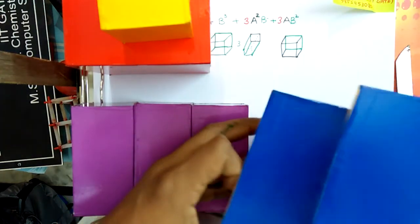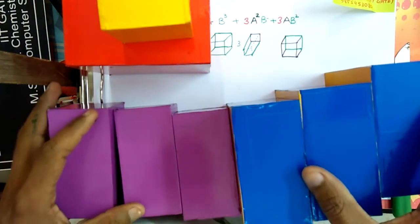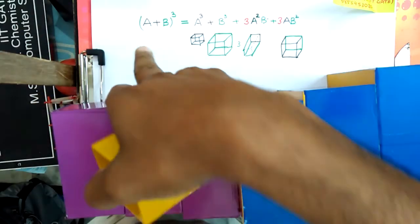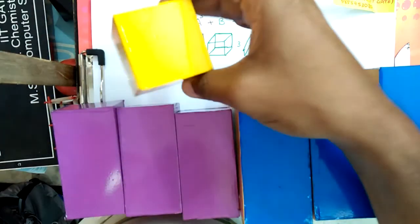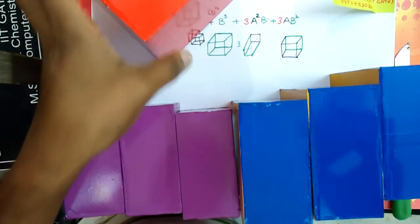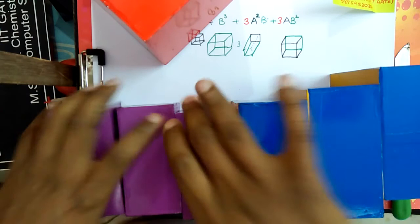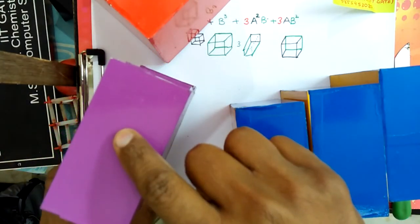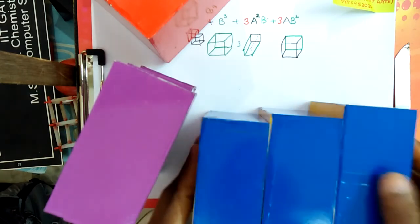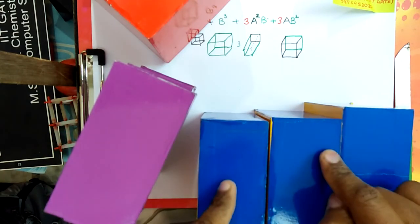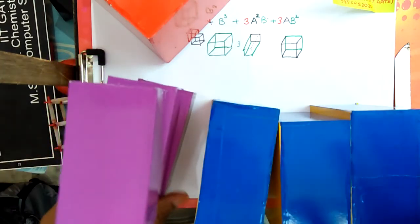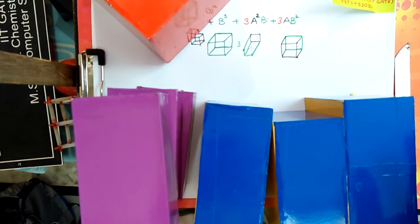So the conclusion is simply that (a + b) cube equals a cube plus b cube plus three pieces of a squared b plus three pieces of a b squared. I hope you understand that. Thanks for watching.